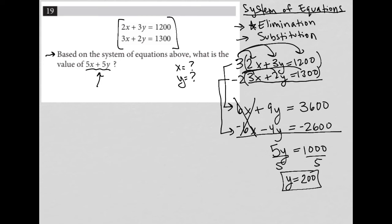That's my y value. I can then take that y value and go back to my original equation, the first one: 2x plus 3y equals 1,200.